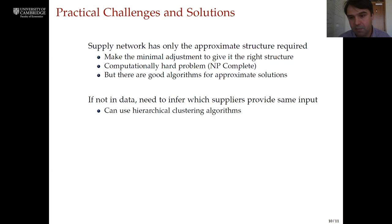If we have data on which inputs are being supplied by which firms then that's great. That helps us a lot but that data might not be available. We might not know exactly what good is being sold by which firm to which other firm. In that case it's really important that we infer when two firms are supplying a substitutable input, the same input. In order to do that we can use hierarchical clustering algorithms that again seem to work fairly well in practice.